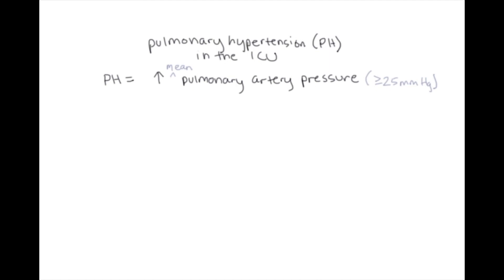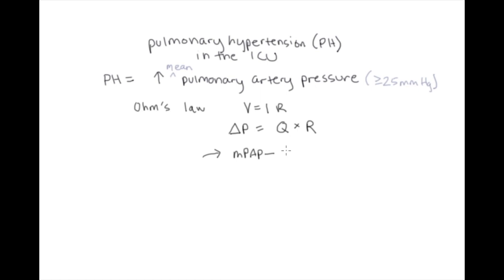Just using the term pulmonary hypertension does not tell me why a patient's pulmonary artery pressure is elevated, so we need to break it down further. Here we have to go into physics — Ohm's law, V equals IR. If we apply Ohm's law to fluid flow, we get a delta P, or driving pressure, equal to flow Q times resistance. Applying this to the pulmonary circulation, our driving pressure is the mean pulmonary artery pressure minus left atrial pressure, and we'll often use wedge pressure since that's what we can actually measure in the ICU. This equals cardiac output times pulmonary vascular resistance, or PVR.